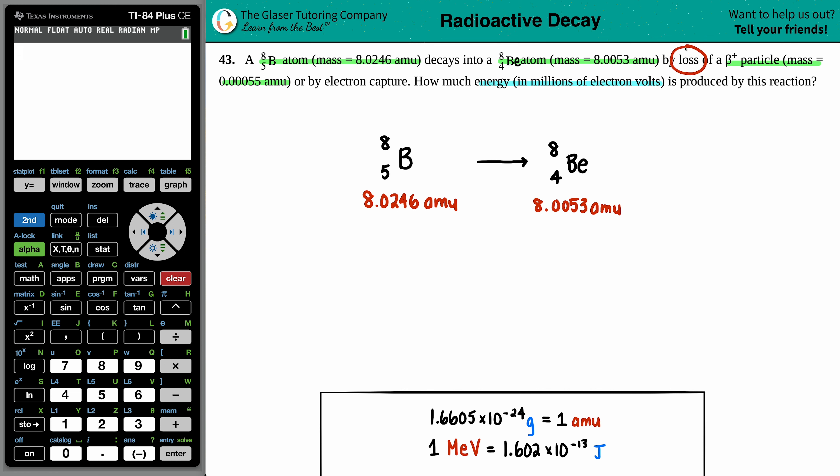And it's losing a positron particle. Loss means you don't have it anymore, so that's on the product side. The beryllium is going to have that positron, which is a plus, a beta plus. It's the opposite of an electron. Still got a mass number of zero on the top, but it has a plus one on the bottom. That makes sense: 8 equals 8 plus 0, and 5 equals 4 plus 1.